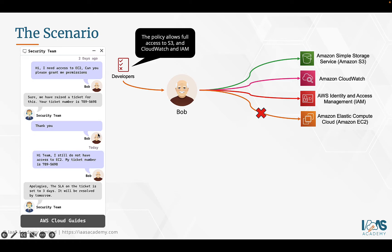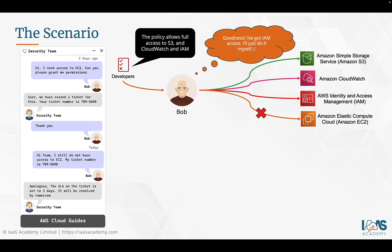It appears that two days ago, Bob made the request for EC2 access and a ticket was raised. It's been two days and Bob is beginning to get a little frustrated — he still doesn't have access to EC2. He mentions to the security team that a ticket was raised and provides the ticket number. The security team came back and said they'll get onto it, but the SLA to resolve this ticket is three days, so please wait. Bob is getting a little frustrated and has an urgent task he wants to try out, so he gets an idea.